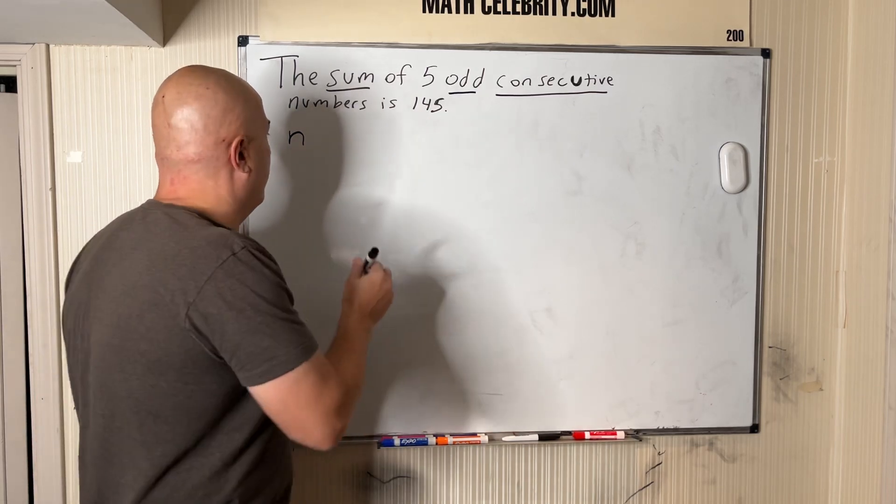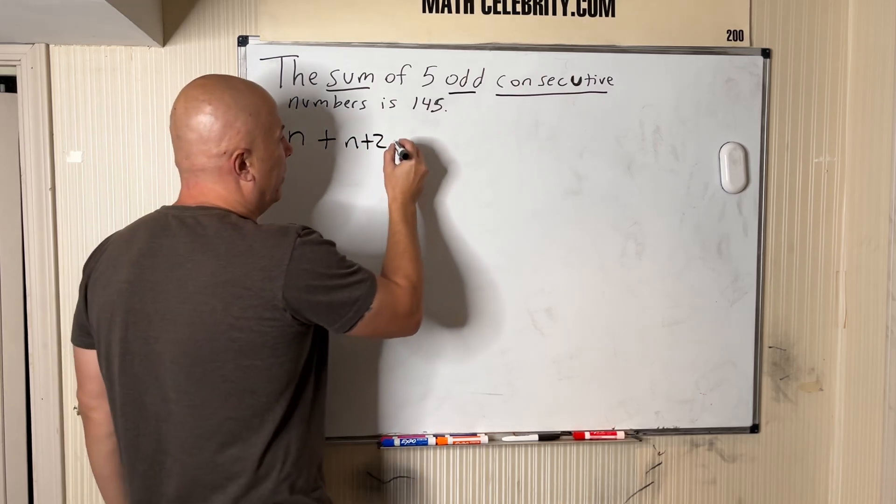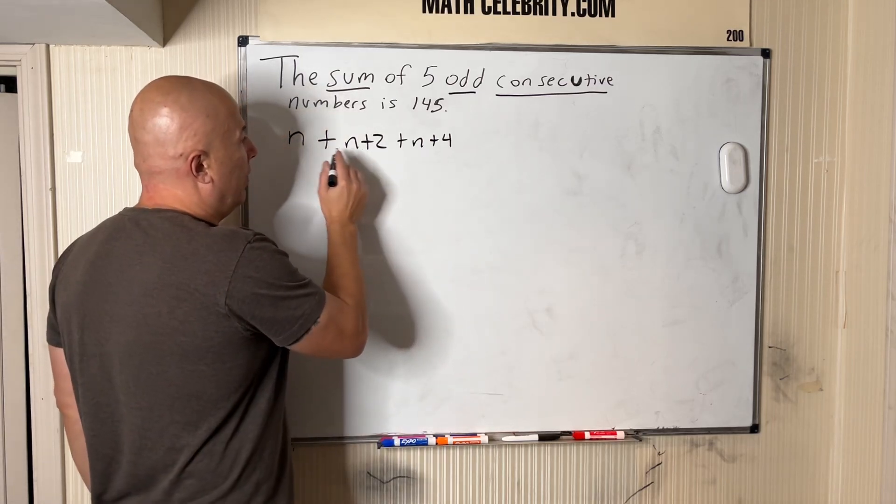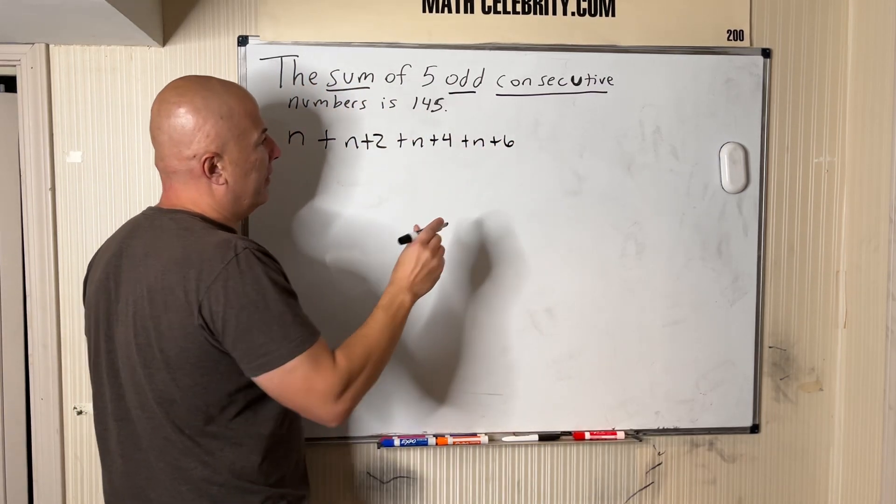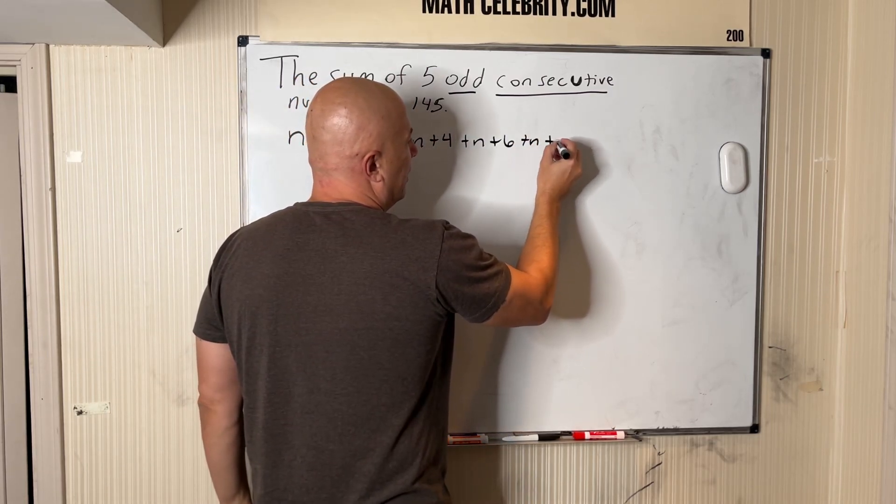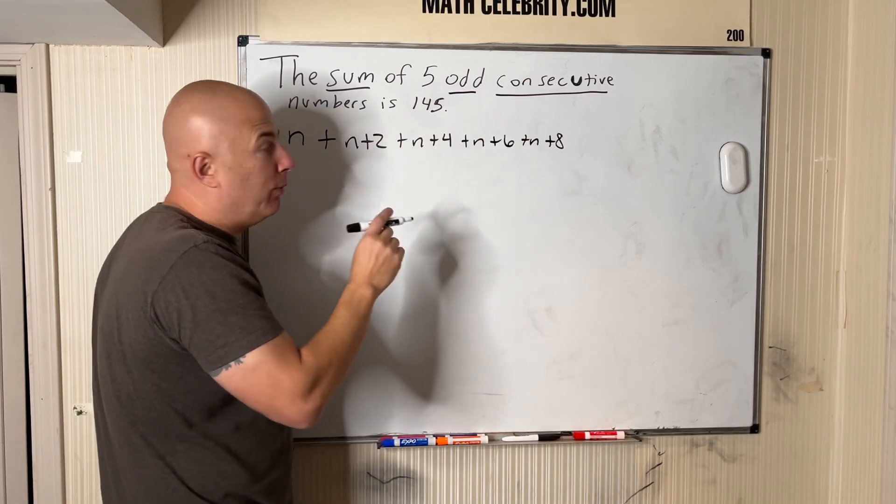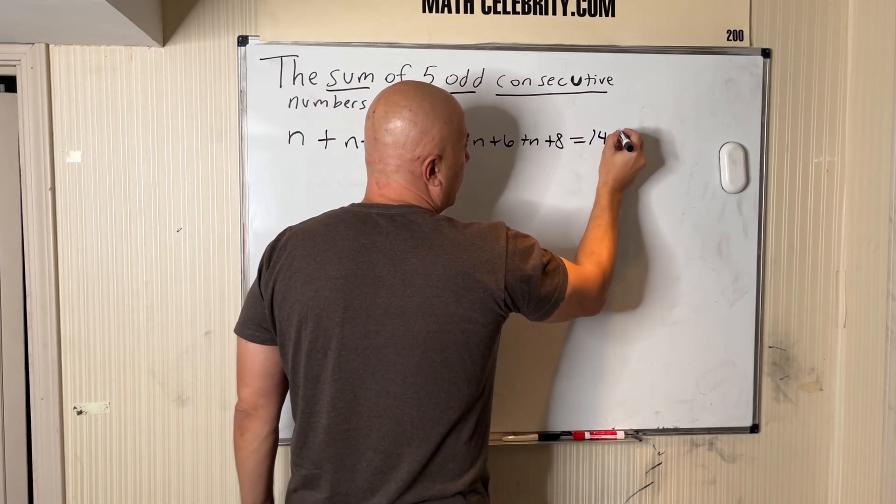So we're going to do n plus two is the next odd consecutive number, n plus four is the next odd. We got one, two, three, n plus six is the fourth, and n plus eight. And then it says the sum is - is means equal to - so we set an equation equal to 145.